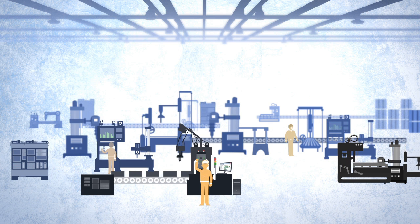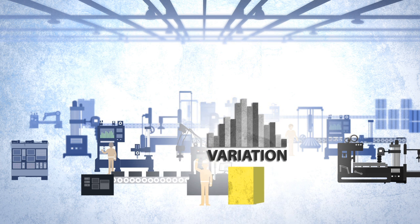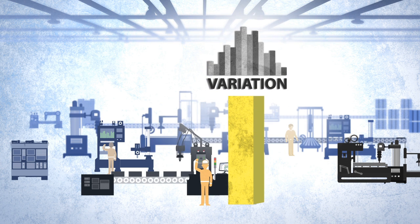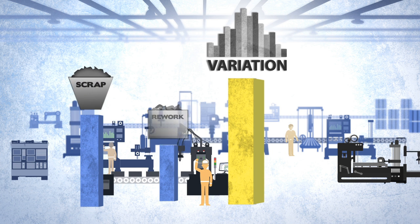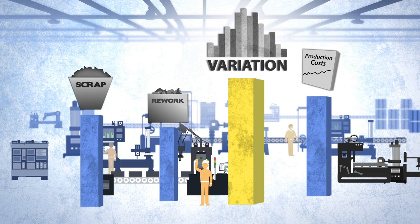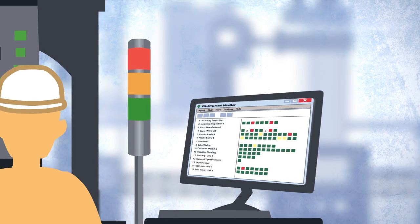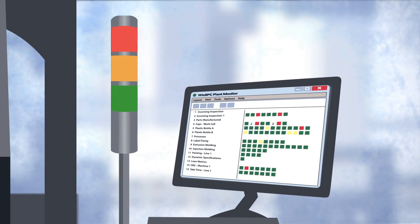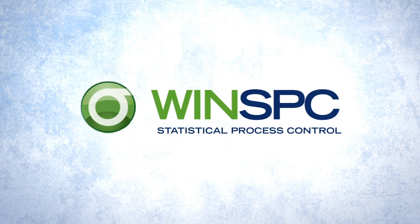But optimizing processes is challenging. Variation exists in every operation that fills, cuts, drills, molds, cooks, or somehow evolves the product. And variation is a primary cause of scrap, rework, and increased production costs. To optimize your processes, you need a solution that monitors your processes in real time, right on the factory floor — a solution that detects risk before problems develop. A real-time statistical process control solution.